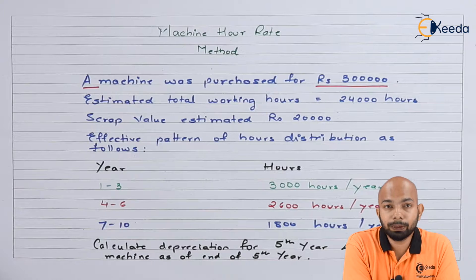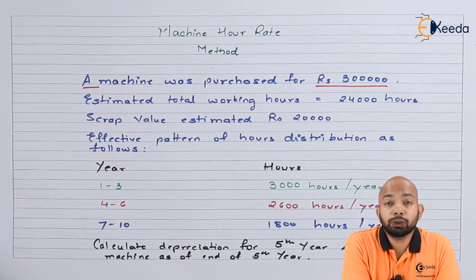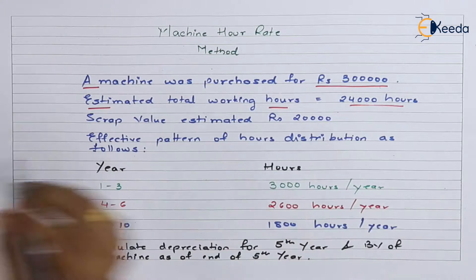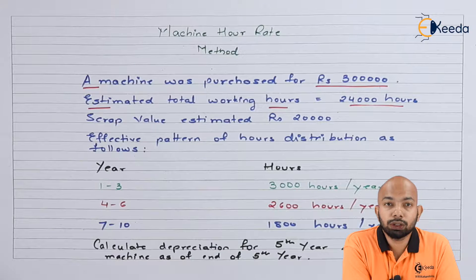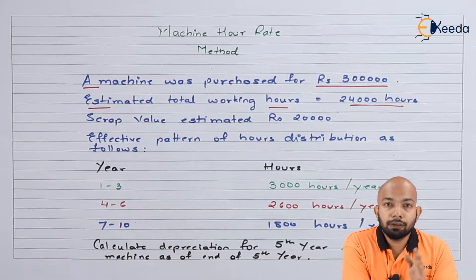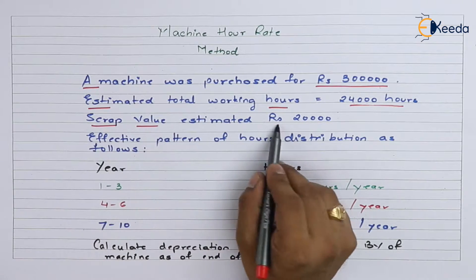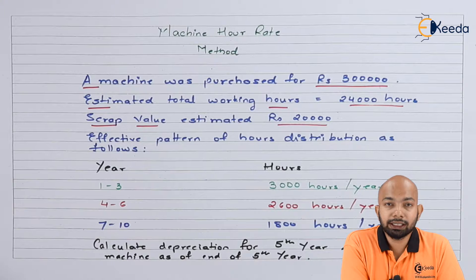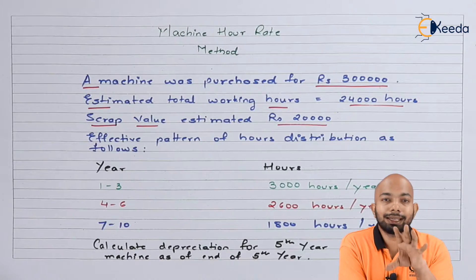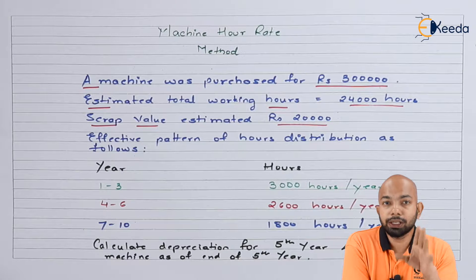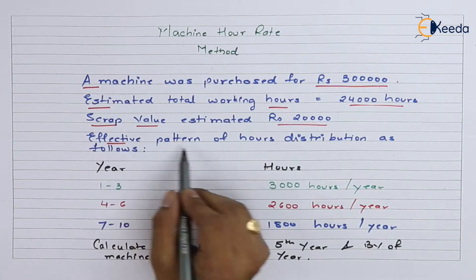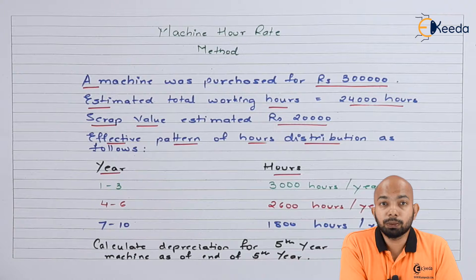The question states that the machine was purchased for rupees 3 lakhs — that is the amount spent on procurement. The estimated working hours over its useful life have been mentioned as 24,000 hours. Scrap value has been estimated as 20,000 rupees. The effective pattern of hours distribution has been mentioned below.